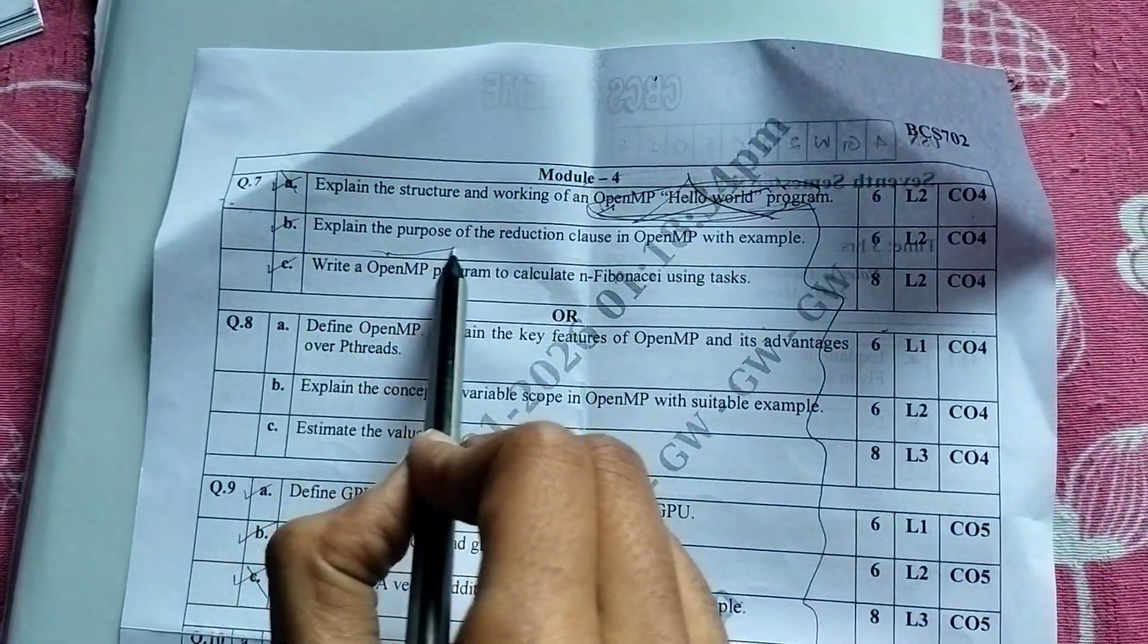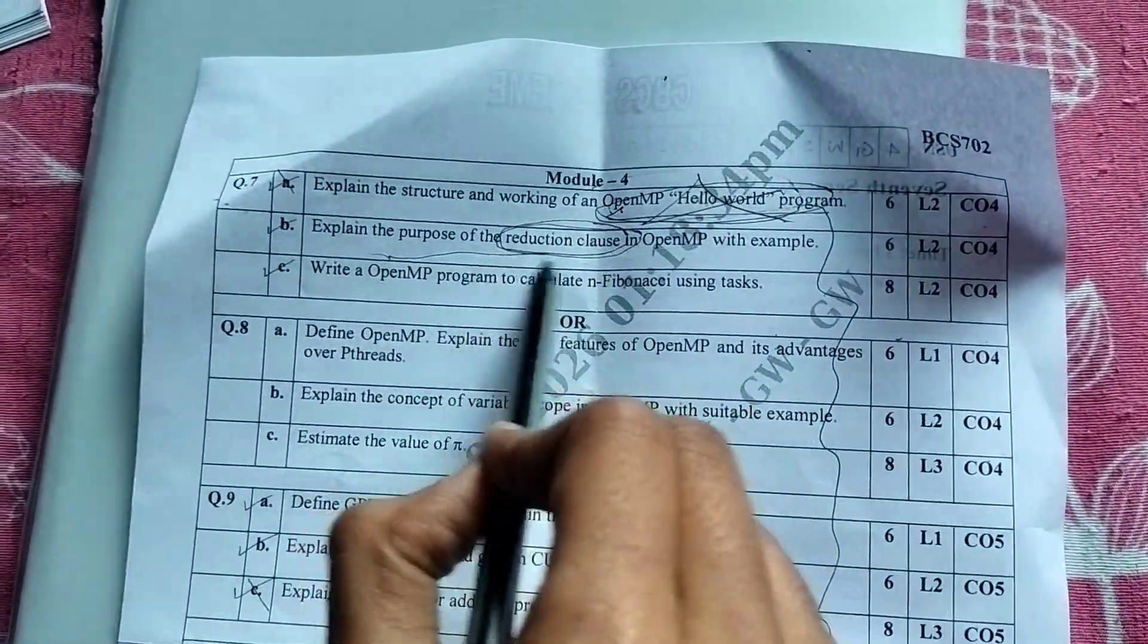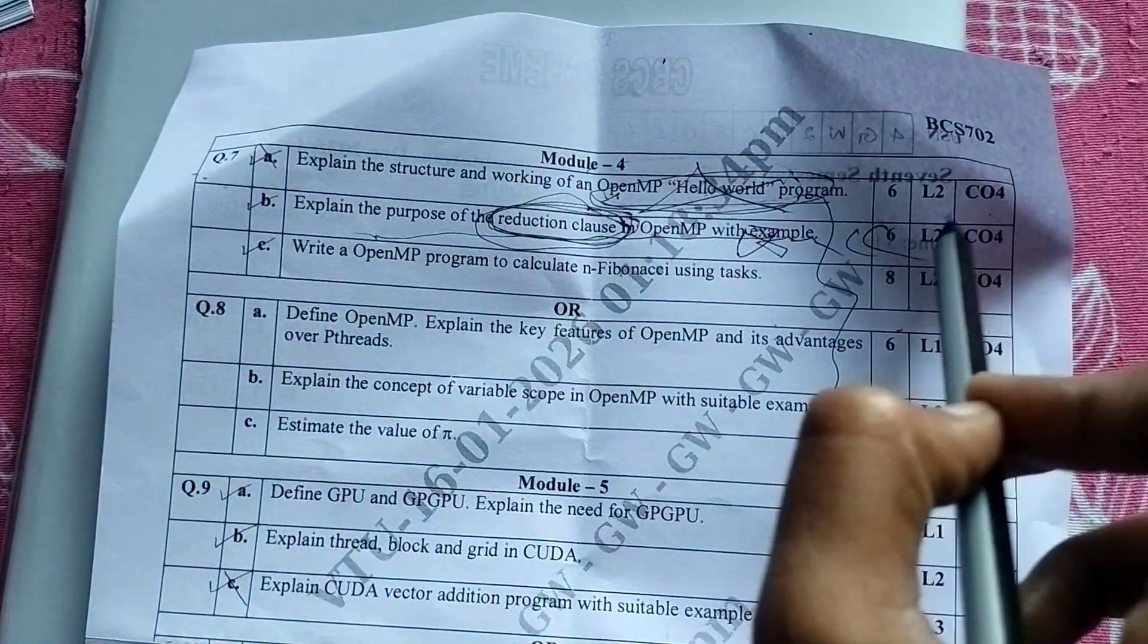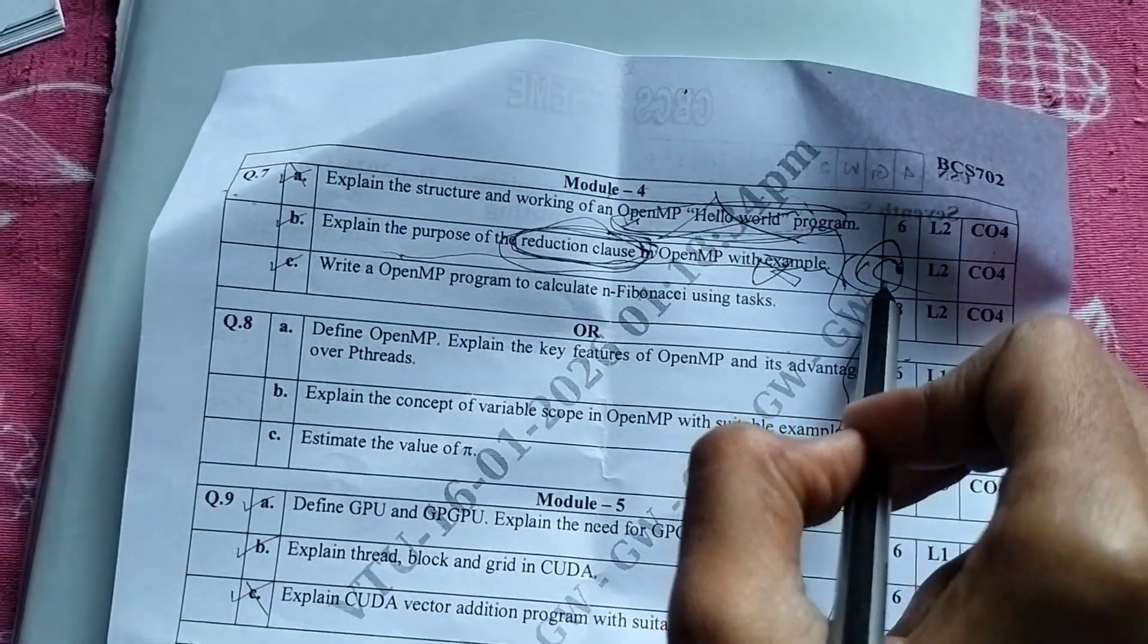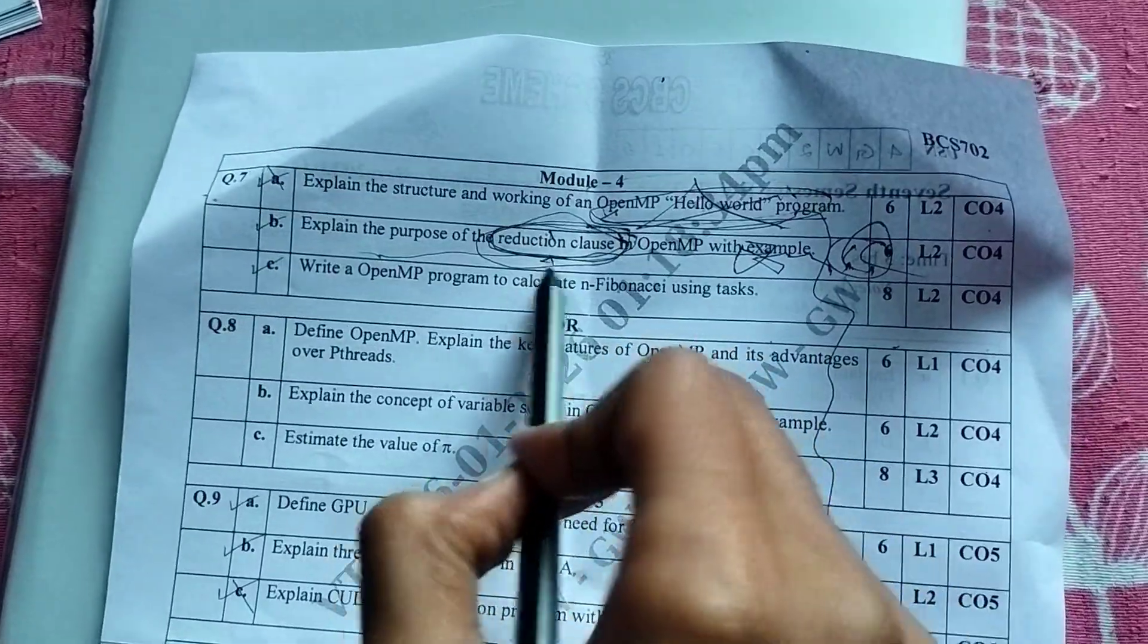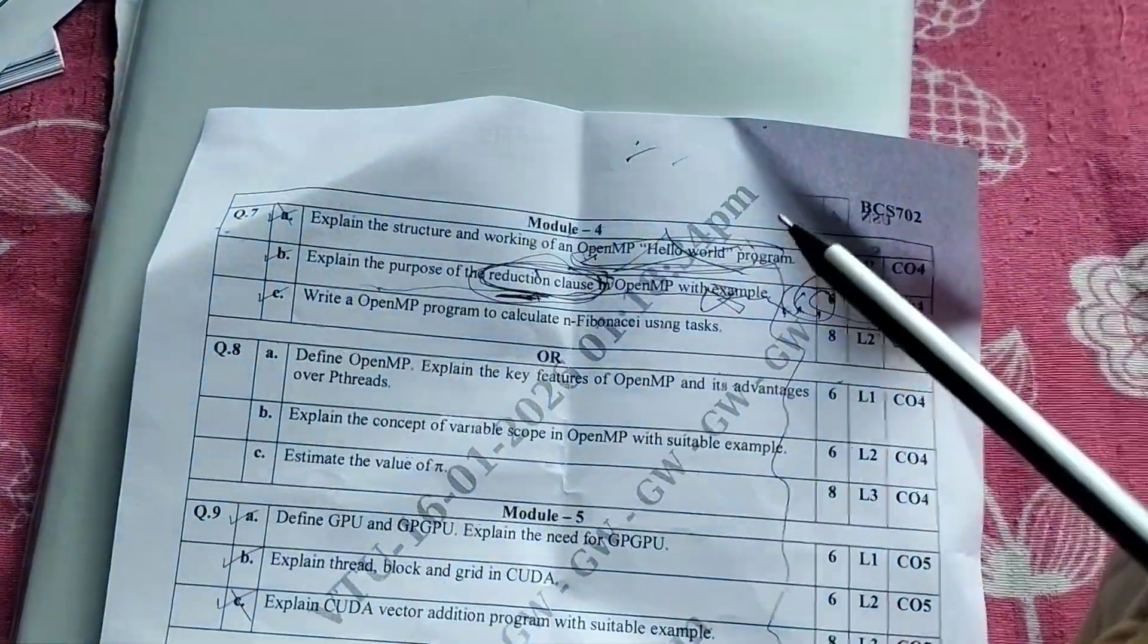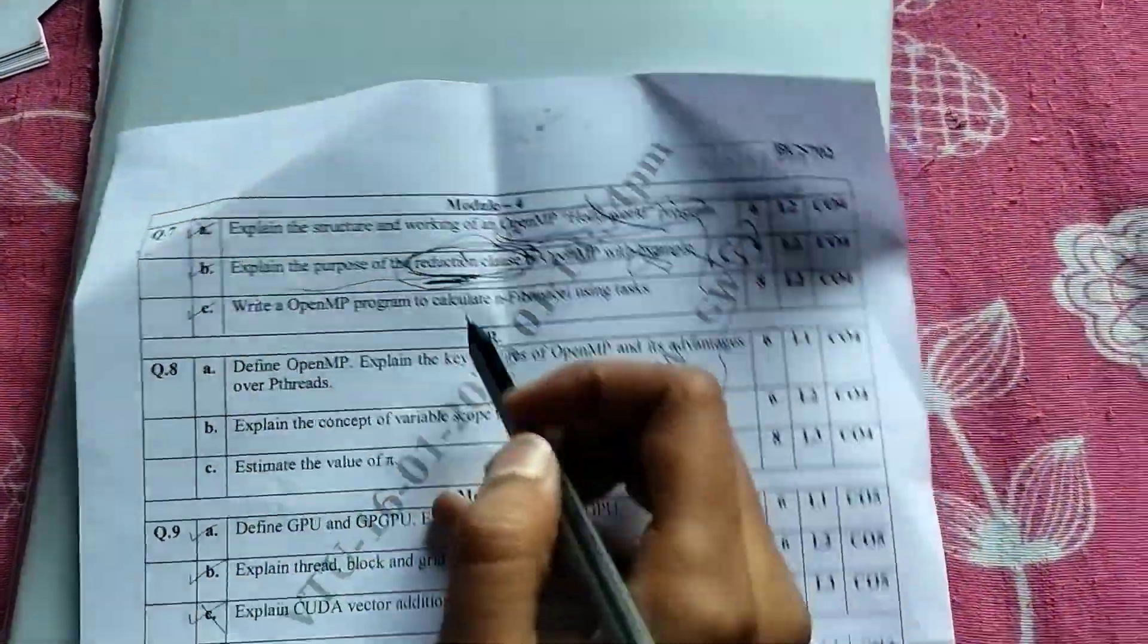And then I wrote this, bro. Reduction class - I think I've told about this even in the final ka cheat code video itself. I have these instincts - like this question will come, this question won't come. I don't know, I'm like always right. So fucking happy about myself.